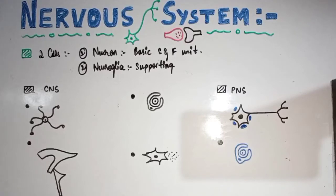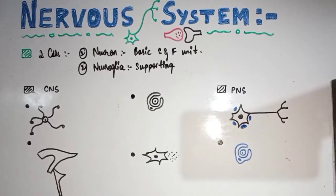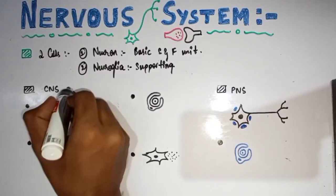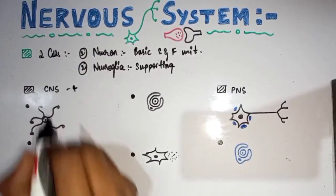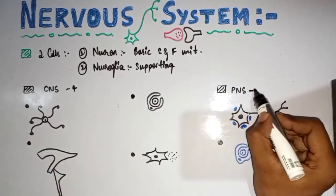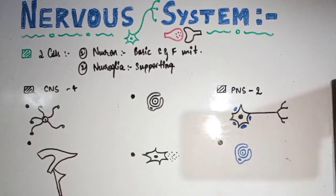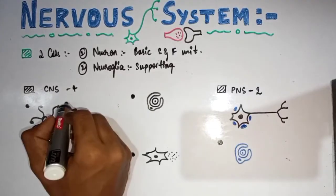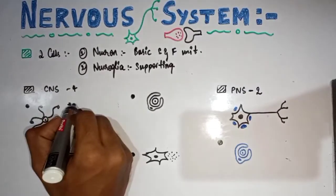Neuroglia are the supporting cells of the nervous tissue. Neuroglia are considered under two categories: those present in the CNS and those present in the PNS. The neuroglia present in the CNS are divided into four types, and those in the PNS are divided into two types.